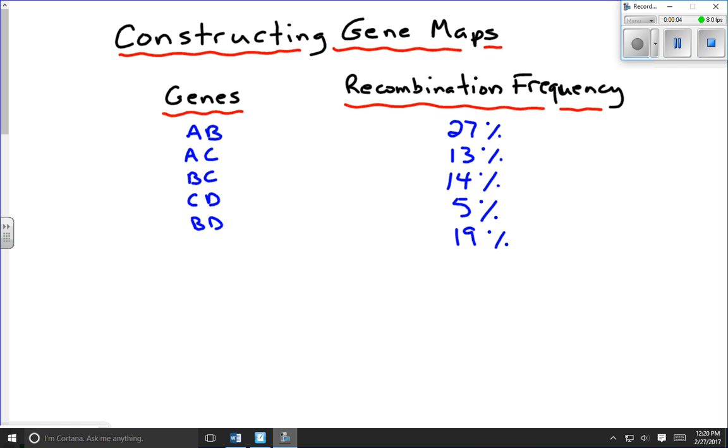This lesson is all about constructing a gene map. Now a gene map is a list of the genes on a chromosome in the order and the approximate relative distance each gene is from another gene. And we can do that if we have something called the recombination frequency data, or sometimes we call it the crossover frequency data, or we've even seen it called the linkage data. Essentially what this crossover frequency or recombination frequency is, is a percentage of time that we get crossing over occurring during meiosis between two genes on a chromosome.